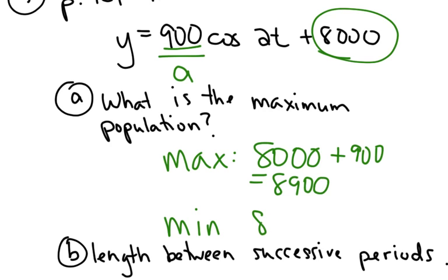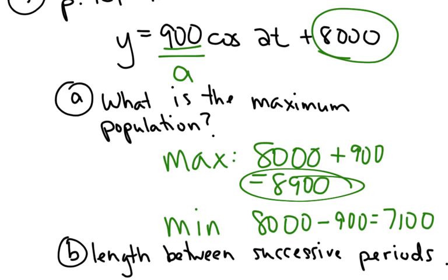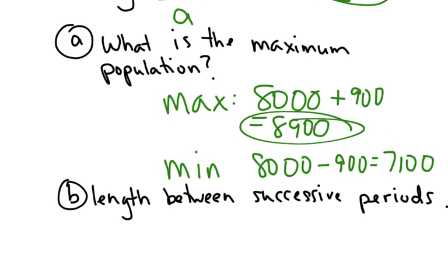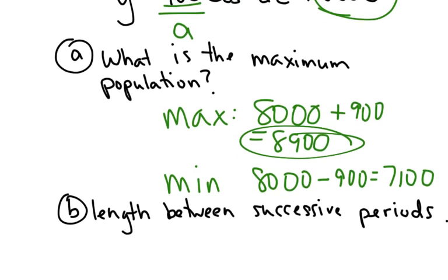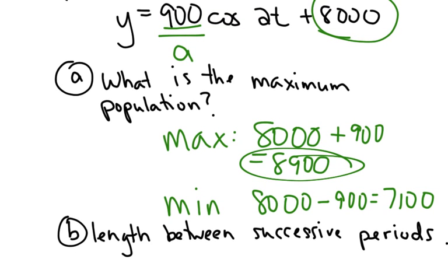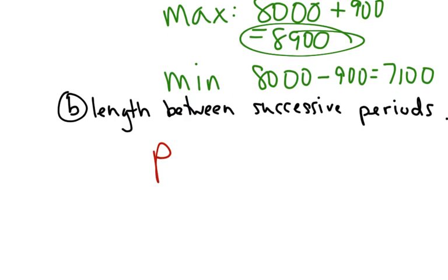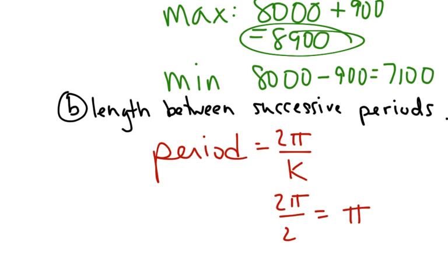If I had asked you for the minimum, the minimum number would have just been 8,000 minus 900, which is 7,100. I didn't ask for that. I asked for the max, but that's how you define the max or the minimum. The second question asks for the length between successive periods. Well, the question is, how often does this reoccur? Well, let's find the period. To find the period, you need to know k. So the period is 2 pi over k, and k is 2, which is pi. Well, pi is 3.14, and since time is in years, the time between successive periods of maximum population must be 3.14 years.